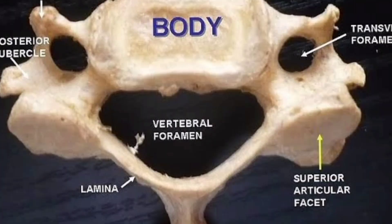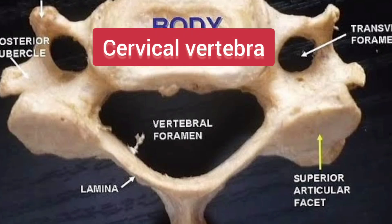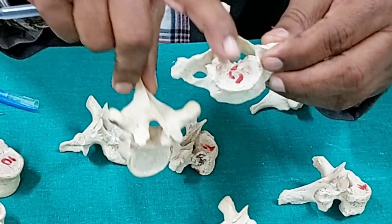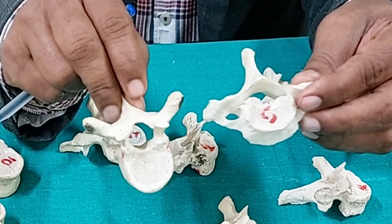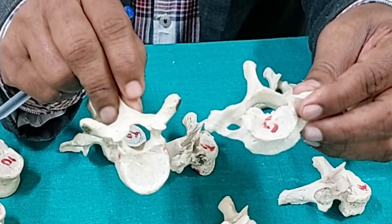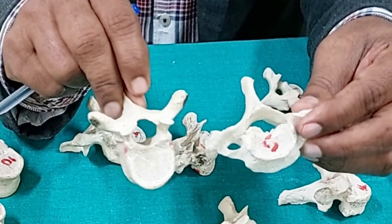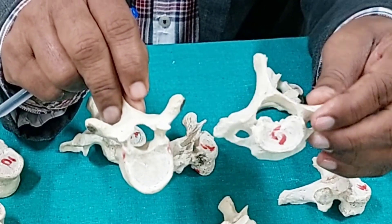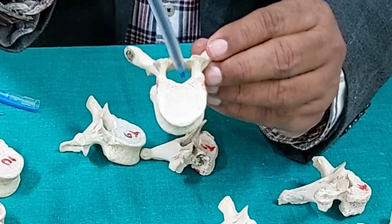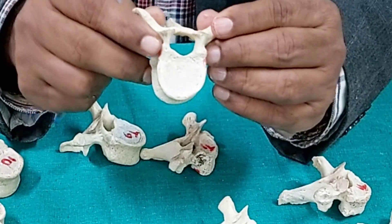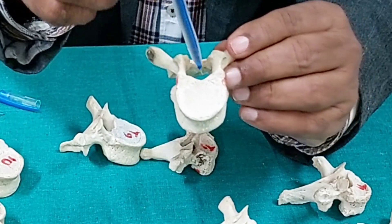In the cervical vertebra the foramen is triangular because it contains the cervical segment of the spinal cord, which is enlarged as it forms the brachial plexus. So the number of nerves is more, making that region enlarged. But the thoracic segment of the spinal cord has no such nerve plexus formed by the thoracic nerves, so it is not enlarged, and the foramen is more or less circular.